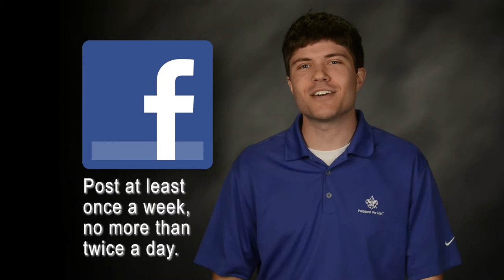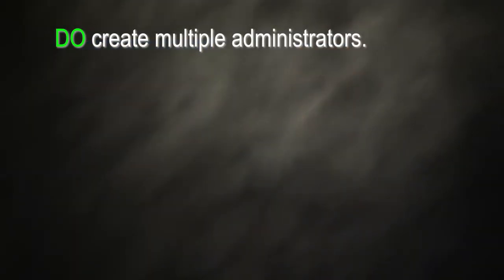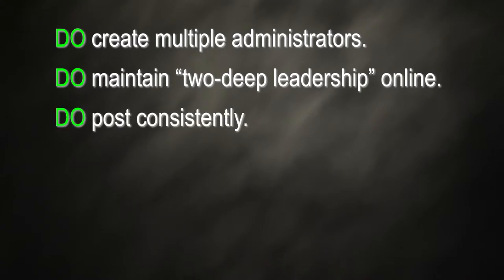With that in mind, we've put together several do's and a few don'ts for your Facebook page. First, here are some things you can do. Create multiple administrators for your Facebook page, including your top youth leaders — this will help your page be updated more regularly. Youth protection rules require you have at least two adult administrators on your page. Maintain two-deep leadership online, meaning no one-on-one contact between adults and youth via social media messaging or email. Post consistently and update your Facebook page weekly, at least, so your users remain active.